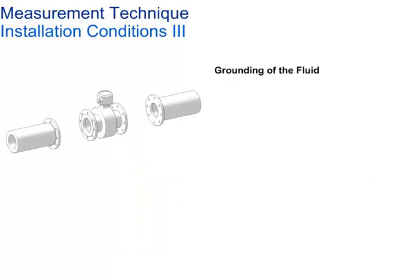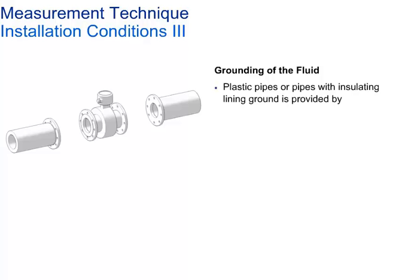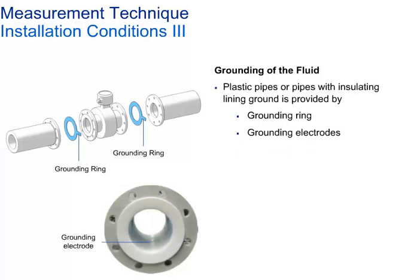Grounding is required not only for safety considerations but also to ensure proper operation of the flow meter. The signals measured at the electrodes are only a few millivolts in amplitude. With plastic pipes or pipes with insulating lining, the signal can be affected by stray ground currents flowing through the flow meter. To avoid this, the fluid must be grounded using grounding rings or grounding electrodes. When stray potentials are present, a grounding ring upstream and downstream of the flow meter sensor is required. The potentials in the station ground and in the pipeline should be identical, and a choice of grounding ring and electrode materials is available to ensure corrosion resistance.